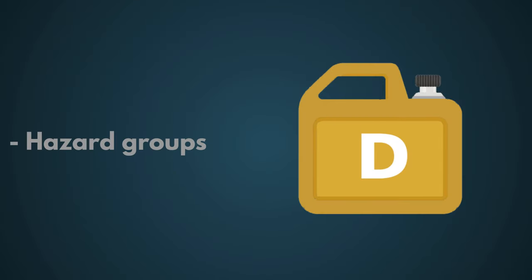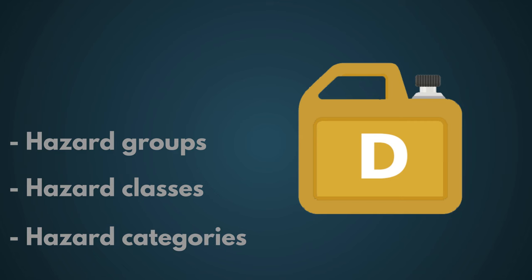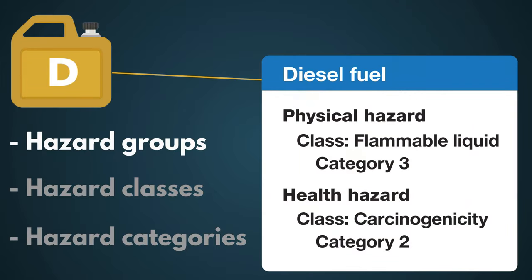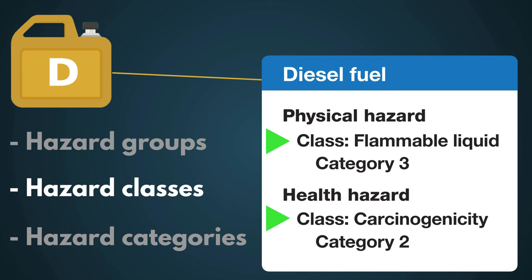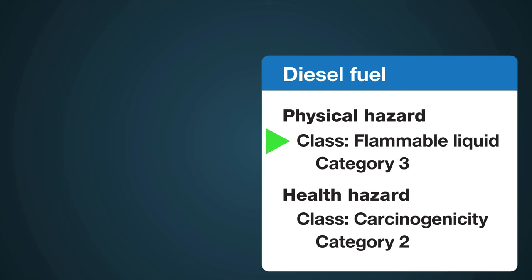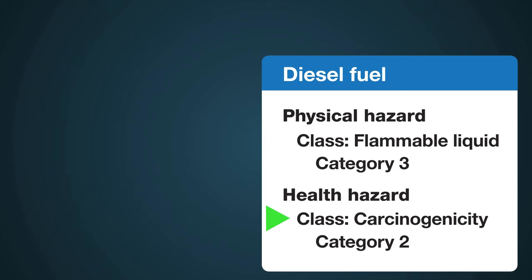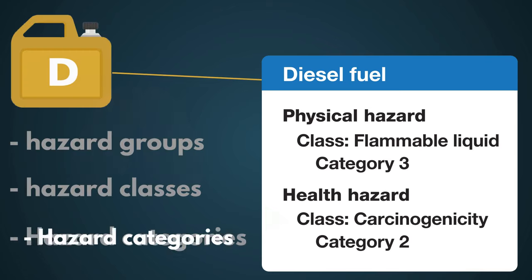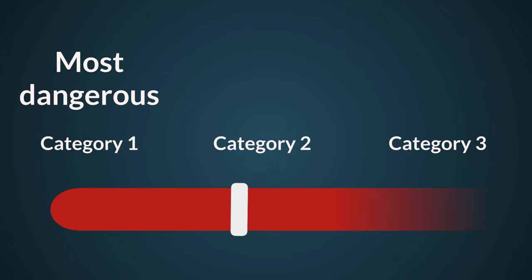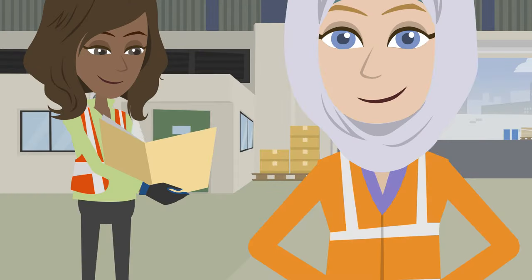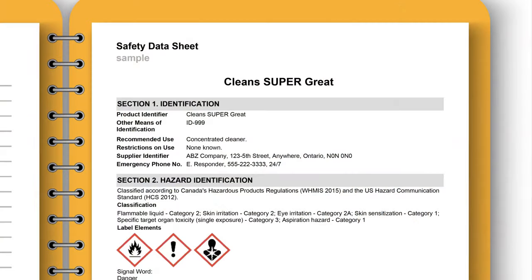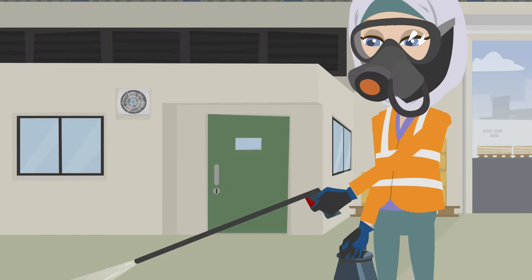WHMIS uses groups, classes, and categories to help you understand what the hazards are and how severe they are. There are two hazard groups: physical hazards and health hazards. There are over 30 hazard classes. Physical hazard classes tell you what a product can do — for example, a flammable liquid can catch fire. Health hazard classes tell you what kind of health problem the product can cause, like skin irritation or cancer. Hazard categories tell you how dangerous a product is. Category 1 is the most dangerous, while Category 3 is the least dangerous. Look for hazard classes and categories on the Safety Data Sheet, and make sure you know all the hazards of any product you work with.